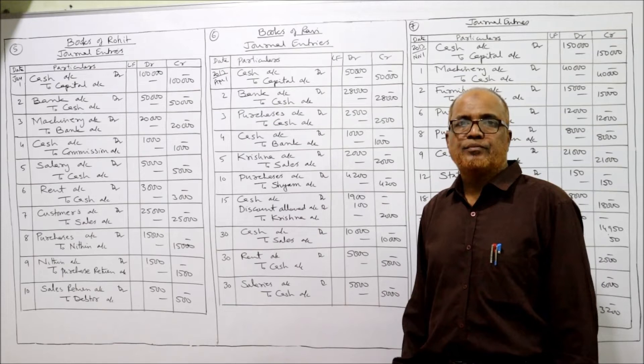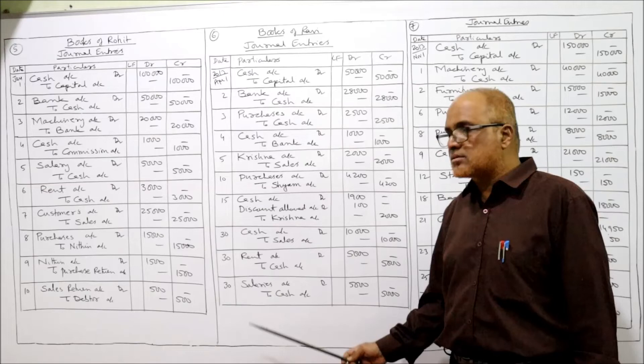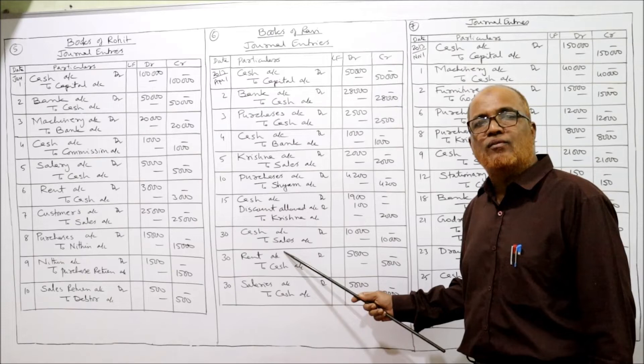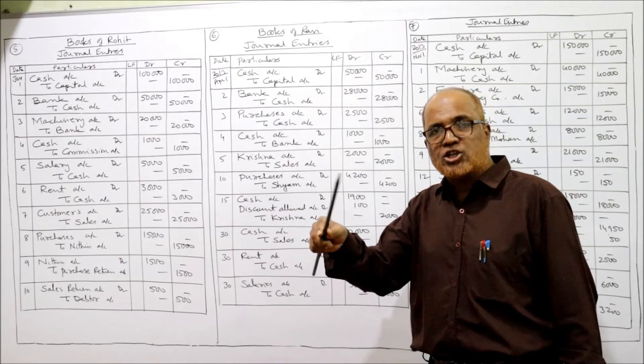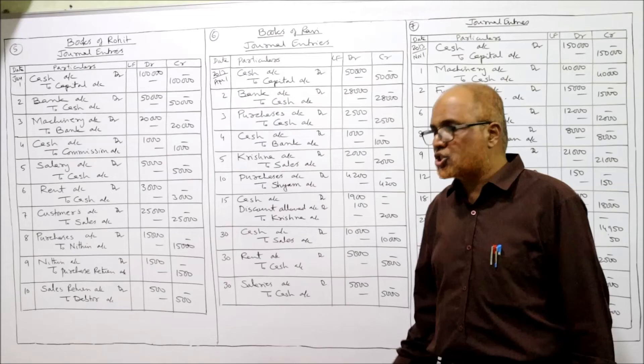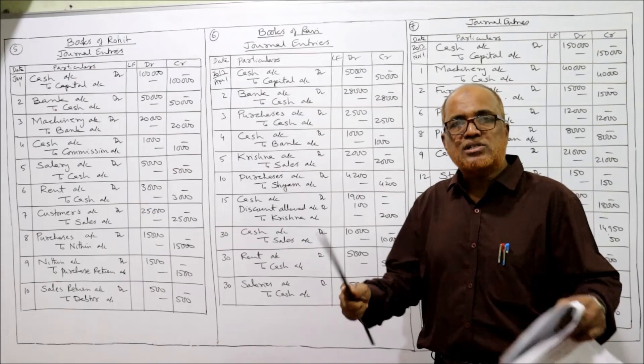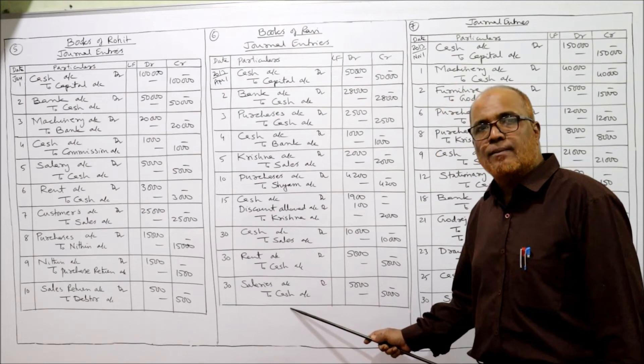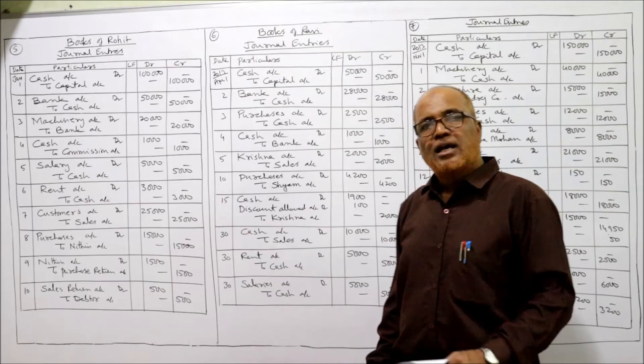Next: cash sales — goods sold for cash, cash is coming in, cash account debit to sales. Paid rent — rent account debit to cash, being rent paid. Similarly, paid salaries — salaries account debit to cash, being salaries paid. That is the end of problem number six.